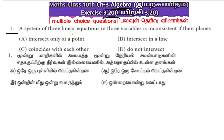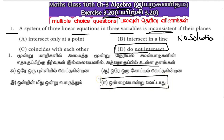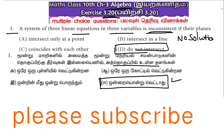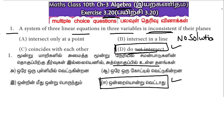A system of 3 linear equations in 3 variables is inconsistent. If their planes are inconsistent, there is no solution — the planes do not intersect. So, Question No. 1, Option D: Do not intersect.